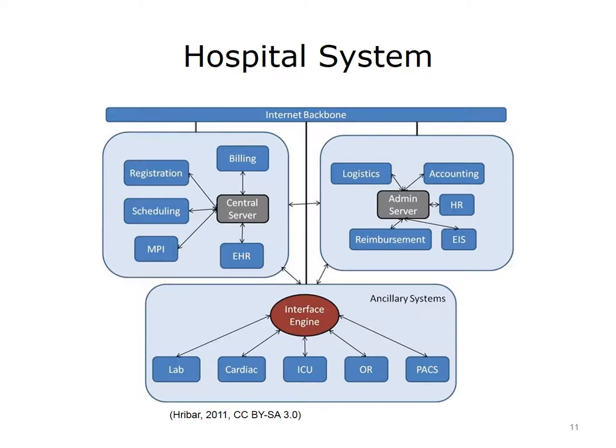In the upper left corner, there are the central healthcare systems: the EHR, the Master Patient Index or MPI, the scheduling system, the registration system, and the billing system. These typically connect to one central server. On the right are the administrative systems that support the hospital. These include everything from human resources or HR systems to the executive information systems, or EIS, to logistics systems, to accounting and reimbursement systems.